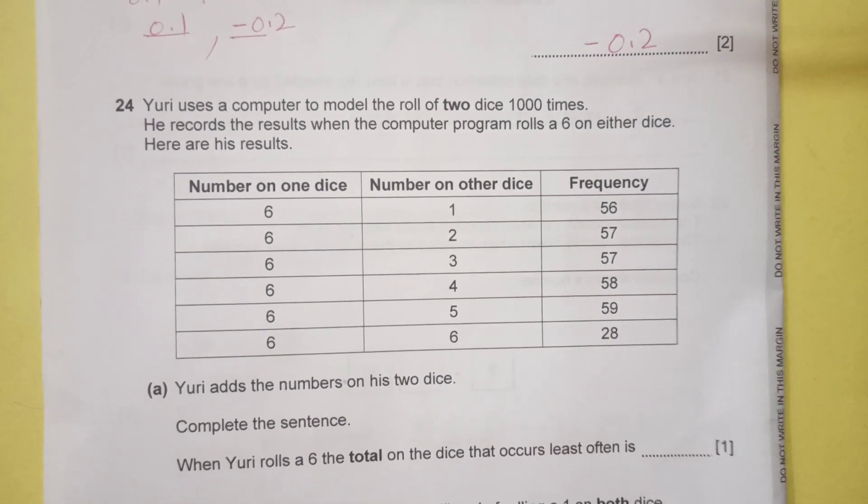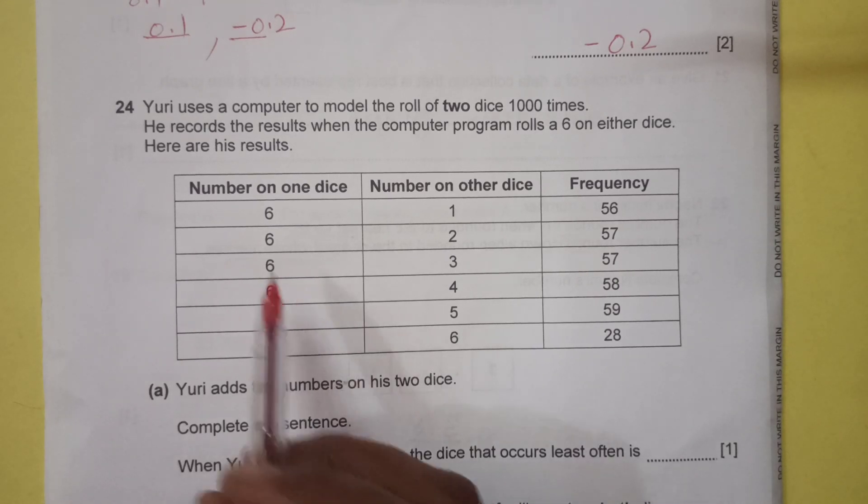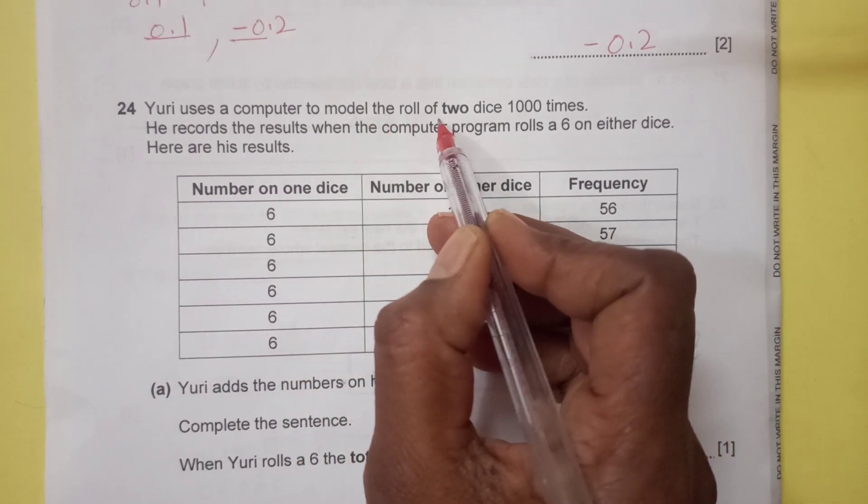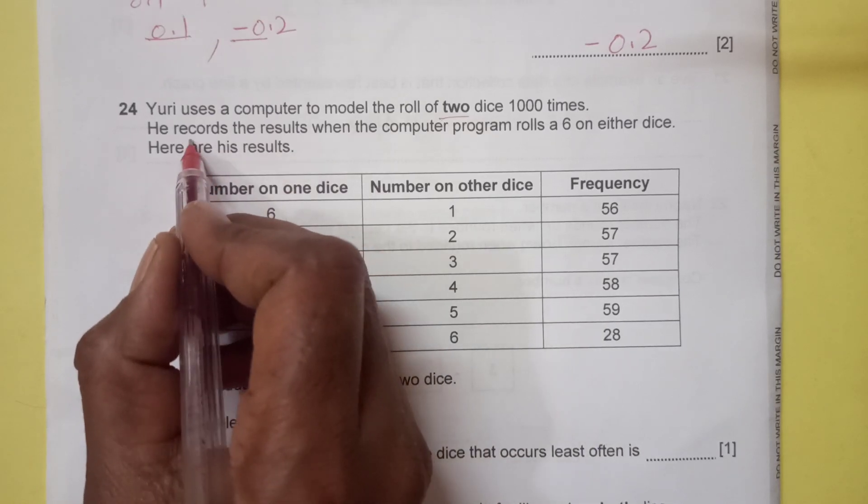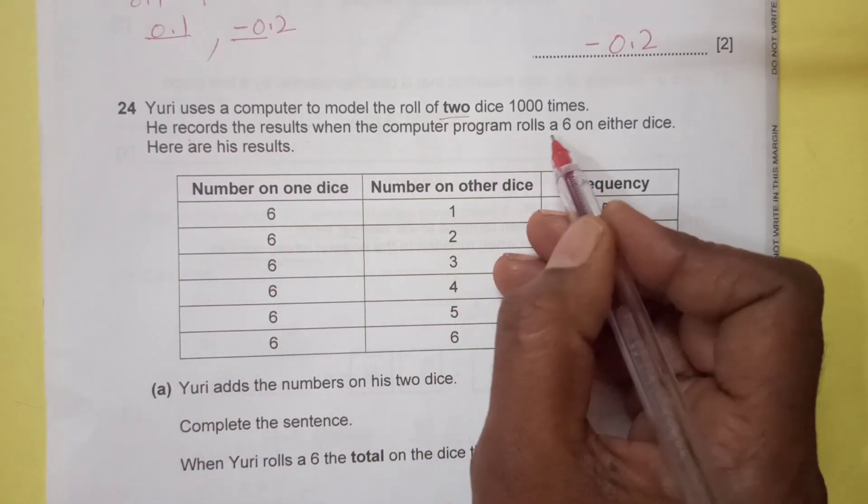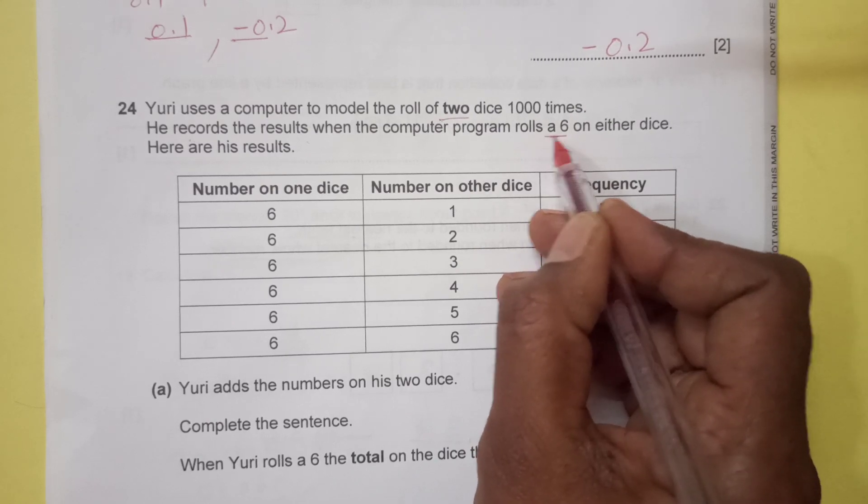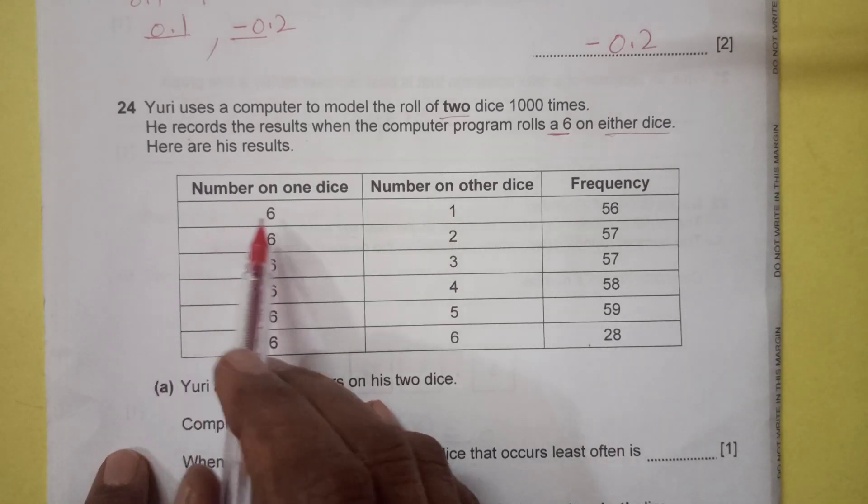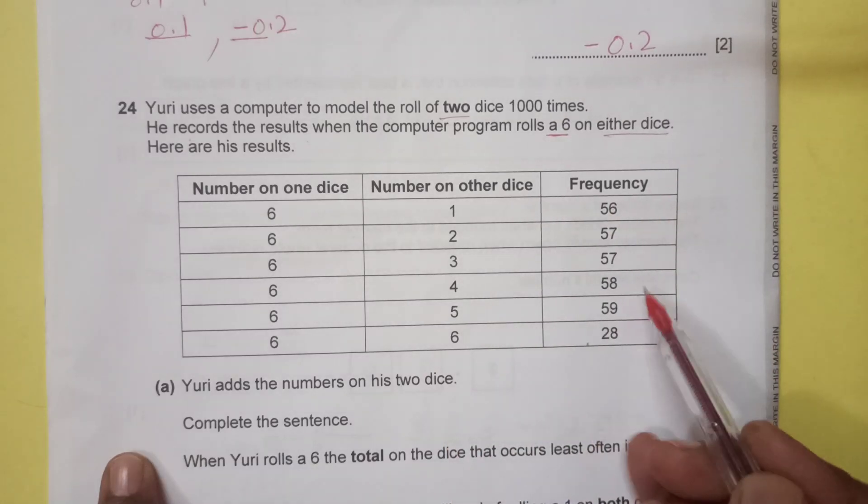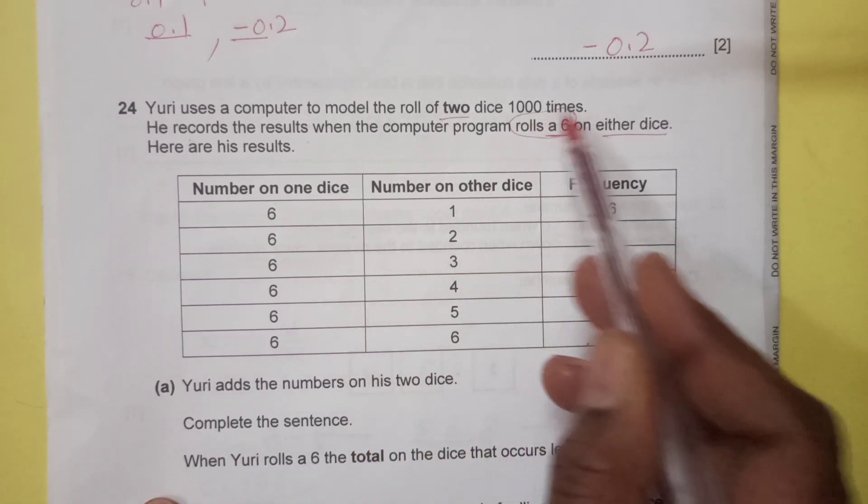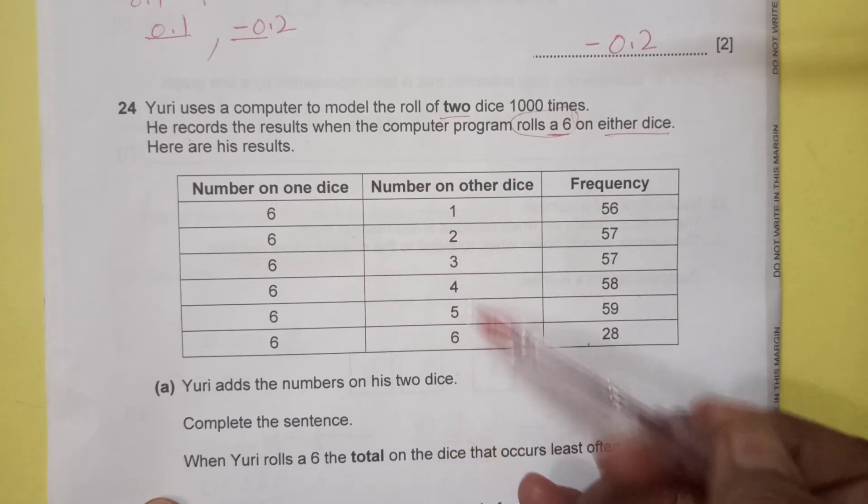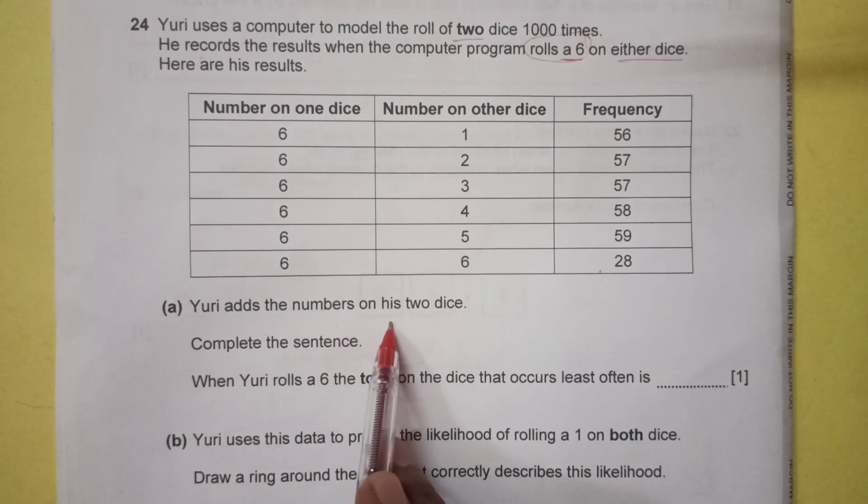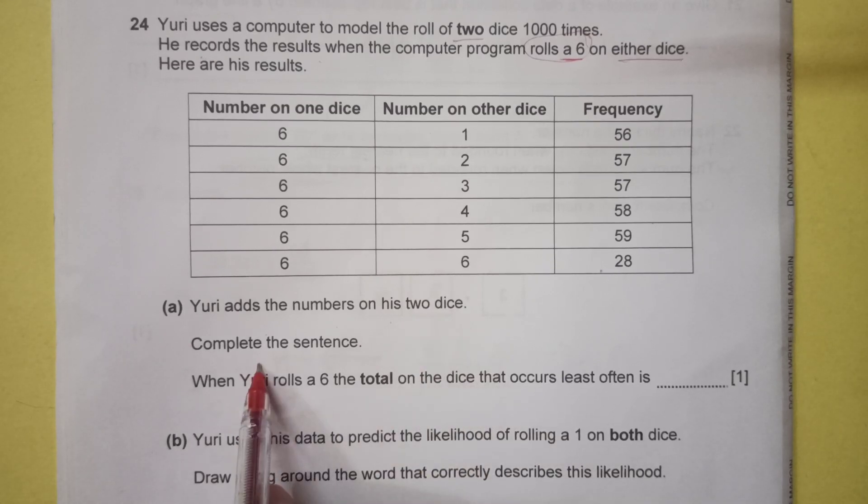Now, number 24. Yuri uses a computer to model the roll of two dice a thousand times. He records the result when the computer program rolls a six on either dice. Here are his results. Number on one dice, number on the other dice, then the frequency. The condition is on one, there should be only six, and on the other, one, two, three, four, five, or six. Yuri adds the numbers on his two dice. Complete the sentence.